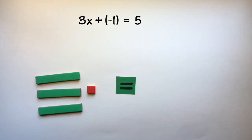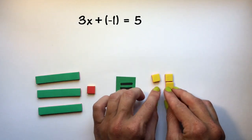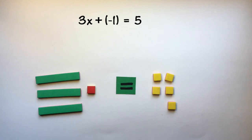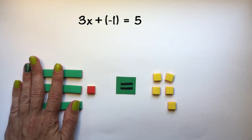And that is equal to 5, so I need 5 positive integer chips. So I have 3x minus 1 is equal to 5.